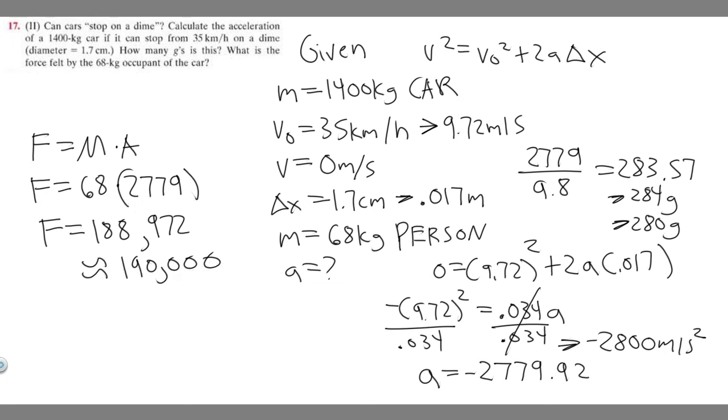We can write this in scientific notation, because if we move the decimal point five, one, two, three, four, five, we can just rewrite it as 1.9 times 10 to the fifth.